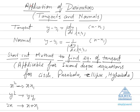Our next topic is application of derivatives, and right now we're discussing tangents and normals. The normal process to find the equation of a tangent is y minus y1 equals dy/dx at (x1, y1) into x minus x1, where x1, y1 is the point at which we have to find the equation of tangent, and dy/dx is the differentiation of the function at that point.